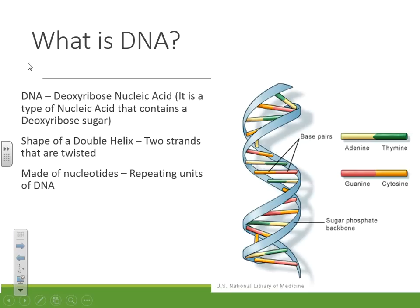DNA is deoxyribose nucleic acid. This is a polymer, and the monomer it's made up of is a nucleotide. So a bunch of nucleotides put together will make up DNA. DNA is a double helix — two strands of DNA twisted around each other — and in the middle the interaction is a base pair. Adenine pairs with thymine and guanine pairs with cytosine.